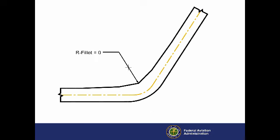R-fillet, the radius of the inner curve, which is often zero as shown here. R-centerline, the radius of the centerline curve, and R-outer, the radius of the curve of the outer taxiway edge. Note that these three radii are not concentric.